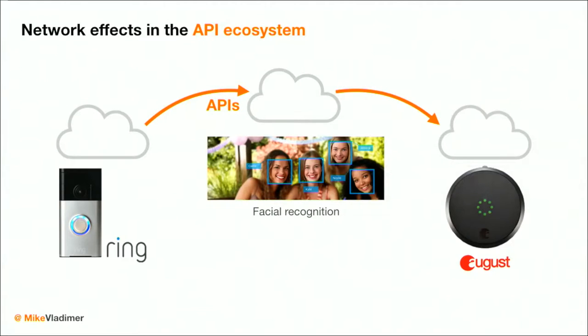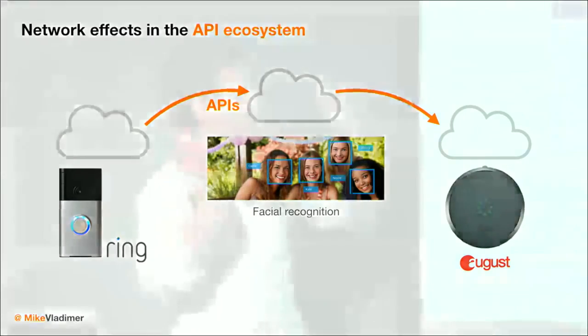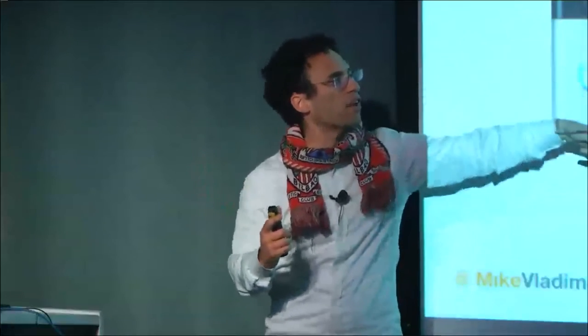You can easily envision how we could take the Ring smart doorbell, capture an image of who's at the front door, send that to facial recognition software in the cloud, recognize it's the homeowner, and then tell the August smart door lock to unlock. The August and the Ring work together in a synergistic way — they enhance each product. The whole is more than the sum of the parts. That doesn't happen with a conventional doorbell and door lock.